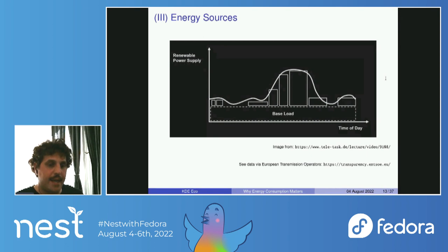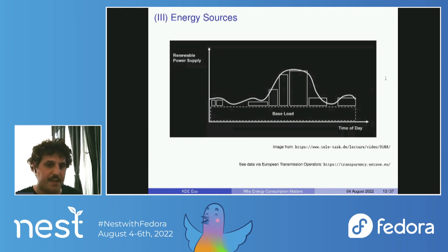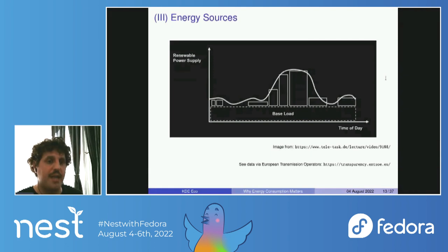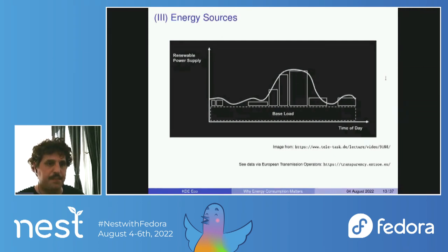The last area is energy sources. This is an abstraction of renewable energy supply: on the y-axis you have how much renewable energy is available, and on the x-axis the time of day. There's a base level of renewable energy supplied to the power grid, but at certain times of day there's an increase — more renewable energy feeding the grid.